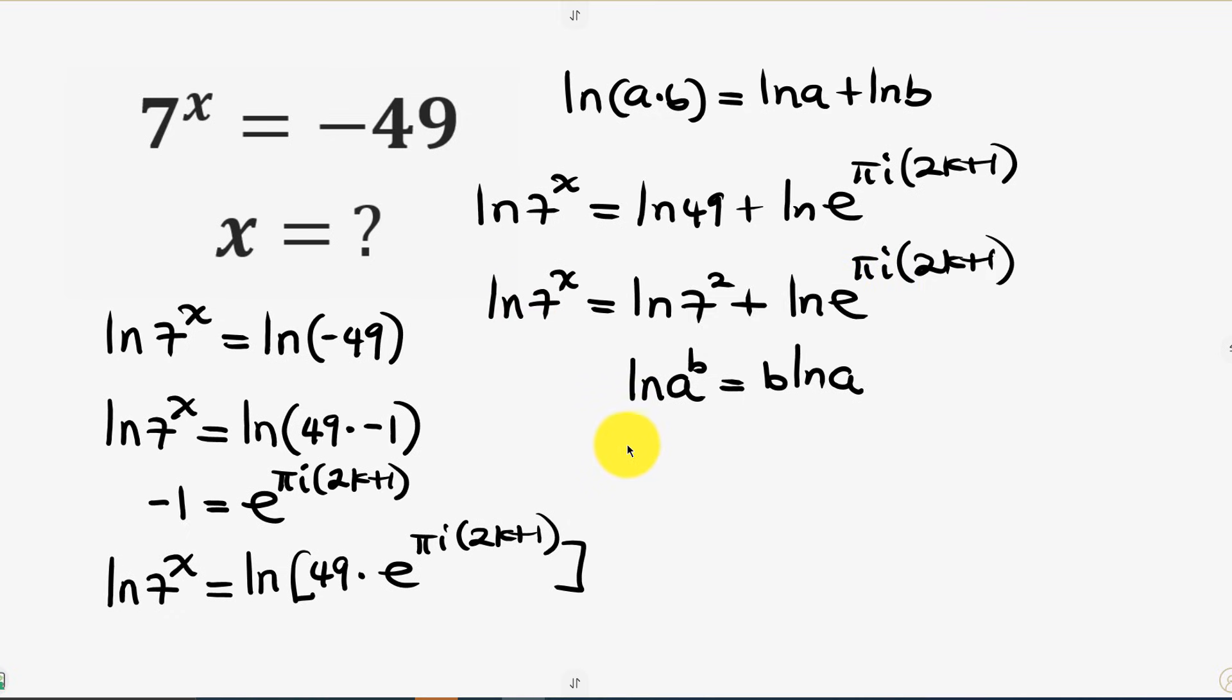So this expression now becomes x times ln of 7 equal to 2 times ln of 7 plus pi i times (2k + 1) times ln of e.